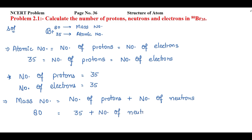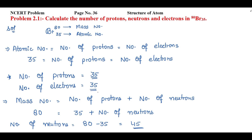Taking the number of neutrons to one side: number of neutrons equals 80 minus 35, which equals 45. So the number of neutrons is 45, number of protons is 35, and number of electrons is 35.